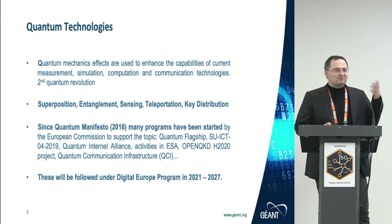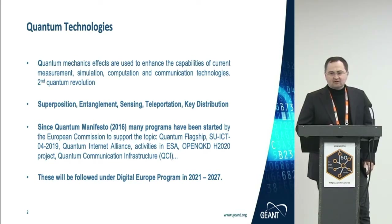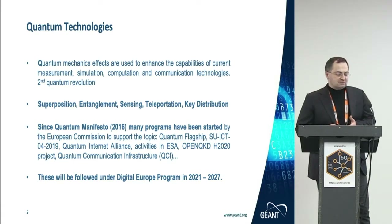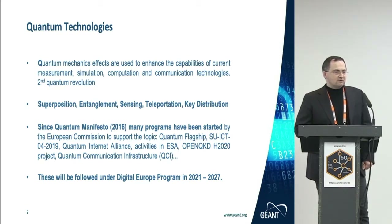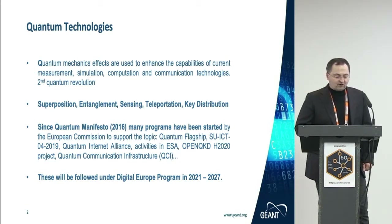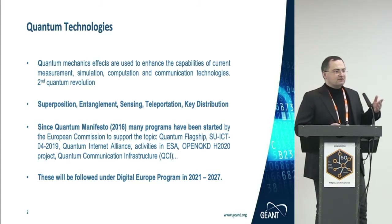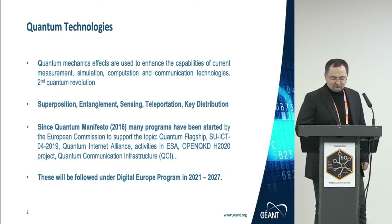Quantum communication and quantum technologies are receiving a lot of interest right now. Simply put, it is the exploitation of quantum effects — such as superposition, entanglement, and teleportation — for use in real applications. Quantum key distribution is one of the first examples of quantum communication use. Since a few years ago, there are many programs, both national and international, regarding quantum technologies. I will briefly introduce them because they are important to what we do in the GÉANT and NREN activity.